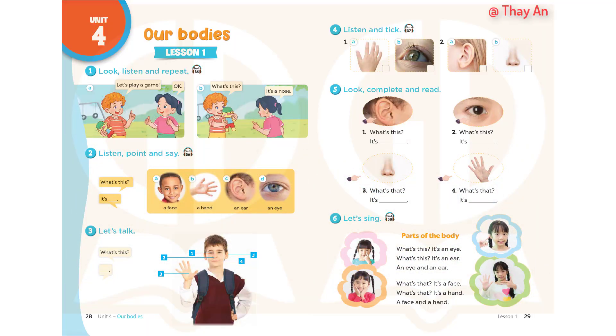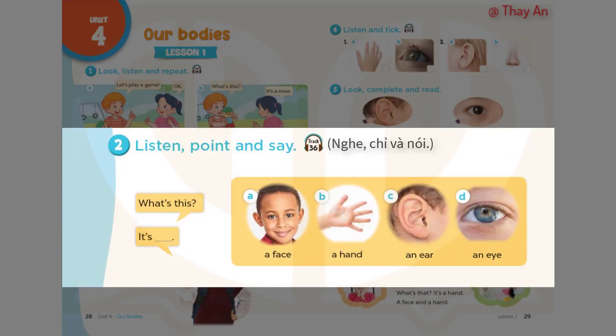Page 28, Lesson 1, Activity 2. Listen, point and say. A: A face. B: A hand. C: An ear. D: An eye.